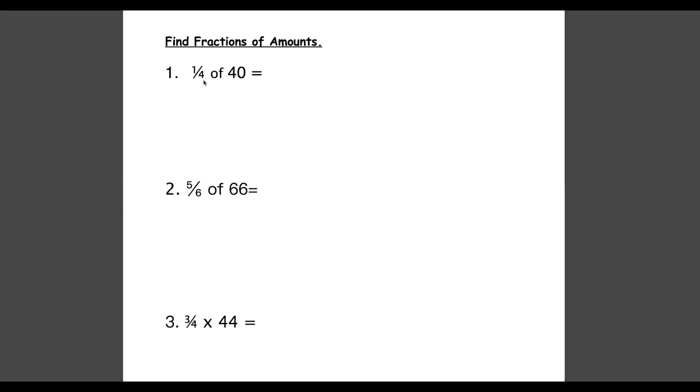The first step is we divide this number by our denominator, and that's the bottom number of the fraction. So in this case it would be 40 divided by 4. Now if you know your times tables it should be really simple. 40 divided by 4 equals 10.